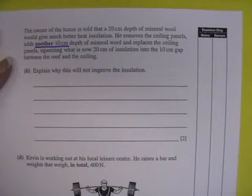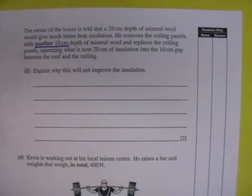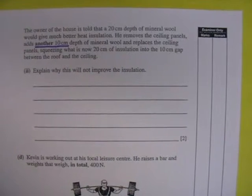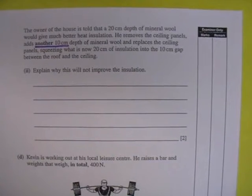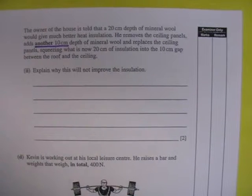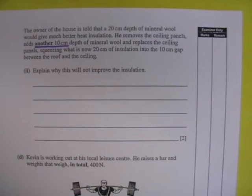Explain why this will not improve the insulation. Mineral wool insulation is effective because it traps air and air is a good insulator, and if you have air trapped and you don't allow it to move, this then provides good insulation which prevents conduction and convection.